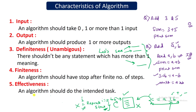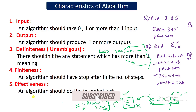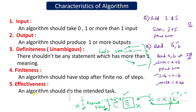So these are the five properties or characteristics of a good algorithm. I hope you understood. Please write any questions in the comment box, share your feedback, like and share this video, subscribe to the channel and press the bell icon for further notifications. See you in the next video. Goodbye.